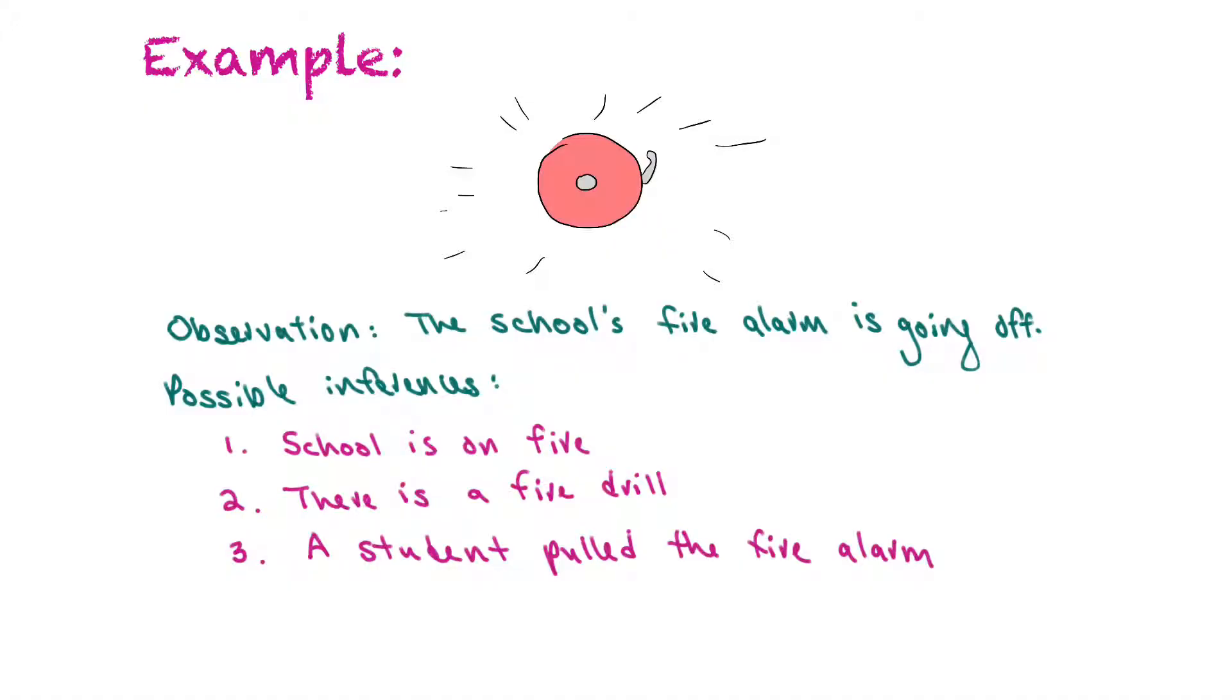Now sometimes we can make an observation and come to different inferences based on our observations. So we'll go through an example here. Our observation is that the school's fire alarm is going off, and there are at least three different inferences that you could make. The first inference could be that the school's on fire, and you could probably infer this if you had some other evidence available, if the fire alarm is going off, and you can smell smoke, and you can see flames, and possibly you can see people leaving the building in a hurried manner. That would be an example of an inference that would explain that the school's on fire.